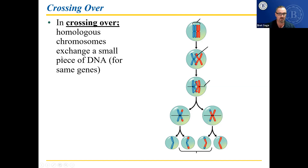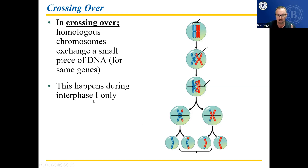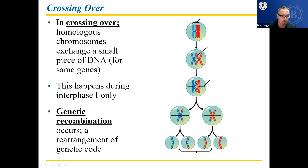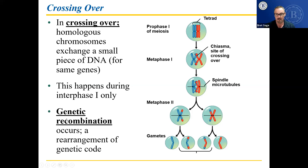In crossing over, homologous chromosomes exchange a small piece of DNA for the same gene — they basically swap tips — which increases variability and survivability of the offspring. On the test, I may show this picture and ask what is happening. The answer is crossing over, but also meiosis and genetic recombination, so keep an eye out for multiple correct answers. What it's showing you is basically the same process of division we saw earlier, but beforehand the tip swap makes the chromosome slightly different.